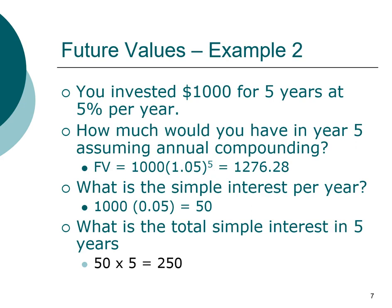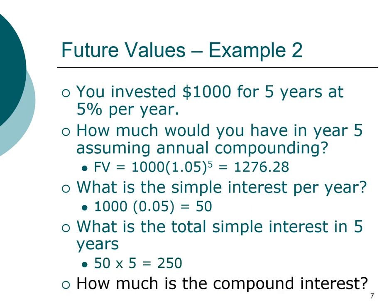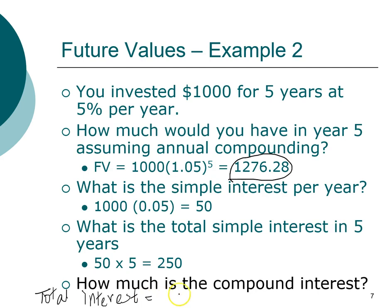How much is the compound interest? We started with one thousand dollars and ended with one thousand two hundred and seventy-six dollars and twenty-eight cents, so our total interest is two hundred and seventy-six dollars and twenty-eight cents. Since our simple interest is two hundred and fifty dollars, the additional twenty-six dollars and twenty-eight cents must be compound interest — the extra earned by reinvesting interest over five years.